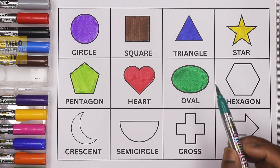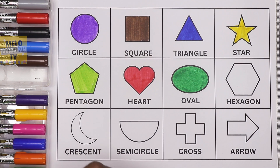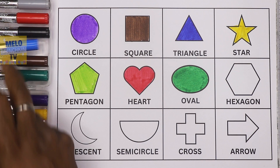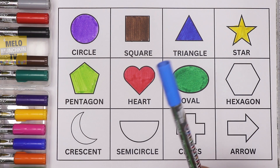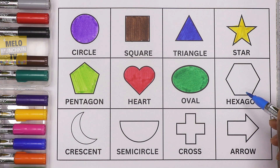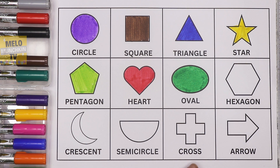So this is now a dark green oval. Next I'll take light blue color to color this shape. This is a hexagon. Hexagon has six sides — that's why it is called a hexagon.